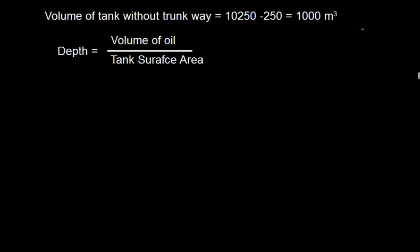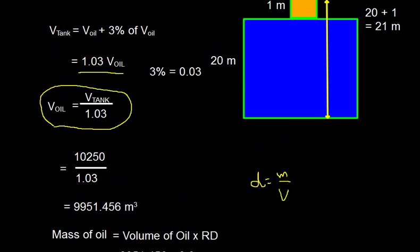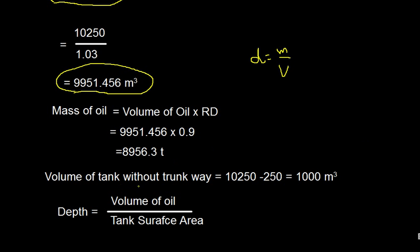Now let us understand the shape. Volume of the tank without the trunkway is 10250 minus 250, which equals 10000 cubic meters. The volume of oil is 9951.456 cubic meters, which is less than 10000 cubic meters — so the oil level is within the rectangular portion only, not reaching the trunkway.